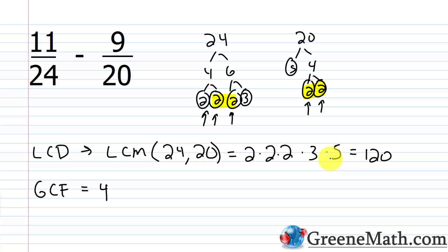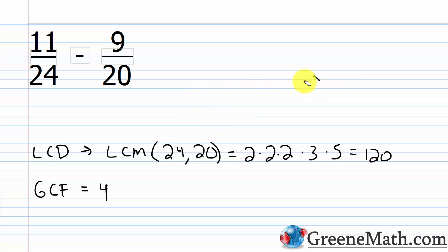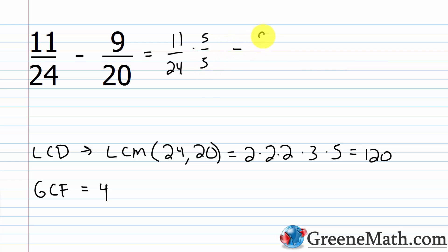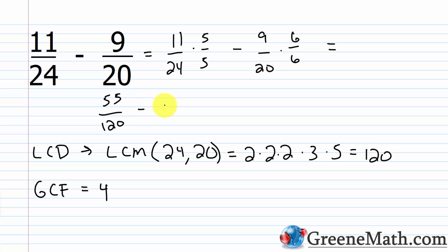Let's execute the problem for completeness. We know the LCD is 120. Transform each fraction: 11/24 × (5/5) = 55/120, and 9/20 × (6/6) = 54/120. So 55/120 − 54/120 = 1/120, which can't be simplified further.